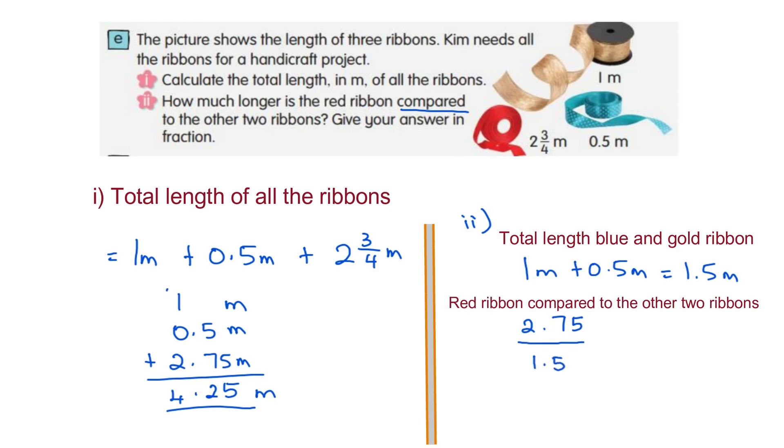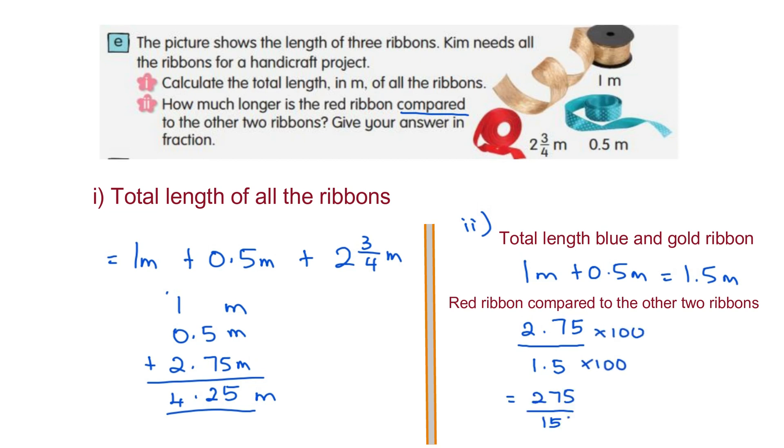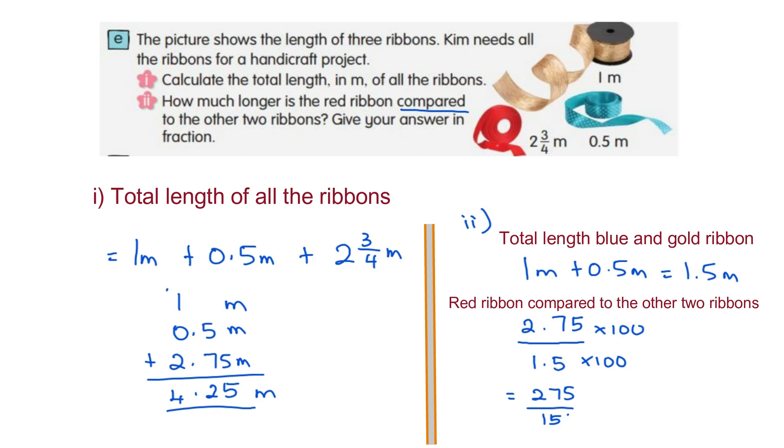To remove the decimal point, multiply with 100. We'll have 275 minus 150. Simplify the fraction. Divide by 5 and we have 55/30.